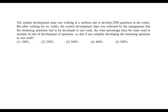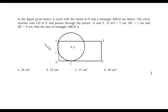So the answer is 300%. That was a very simple question. Let's take the next one. This question is based on geometry. In the figure given below, a circle with center O and rectangle ABCD are drawn. The circle touches side CD at E and passes through the points A and F. If AO is equal to 3, that is the radius of the circle, and DF is equal to 1, that is this length, and DC is equal to 8, that means one of the sides of the rectangle is given to be 8, then what is the area of rectangle?